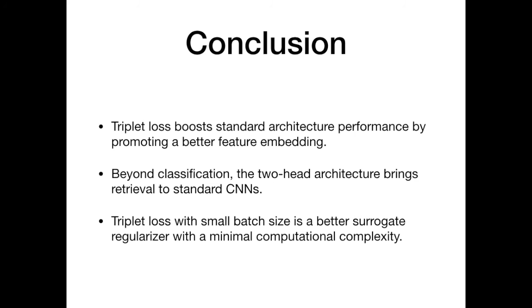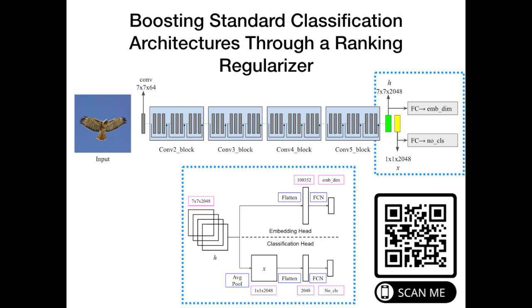Triplet loss boosts standard architectures' performance by promoting a better feature embedding. Beyond the classification, the two-head architecture brings retrieval to standard CNNs. Triplet loss with a small batch size is a better surrogate regularizer with a minimal computational complexity. This work is accepted in WACV 2020. Our code is available on GitHub.